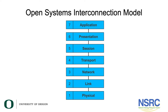Each layer provides a service to the layer above and it makes use of the services of the layer below to do its job, except for layer one which is the bottom and therefore doesn't have any layer below it. Layer one's job is very simple: it just takes a stream of zeros and ones and transfers that across some medium like a copper cable or a fiber optic, and converts them back into a stream of zeros and ones at the other end — hopefully the same stream.